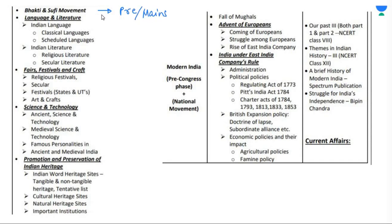There is always at least one question in mains from the Bhakti and Sufi movement. This movement is known as the revolution of medieval Indian history because it removed caste-based discrimination from society. Anyone could join the movement — lower caste or higher caste. Bhakti movement was started by people from the lower caste. The message was: to reach God, caste-based discrimination is not allowed — God does not look at your caste or religion, it just wants your love.